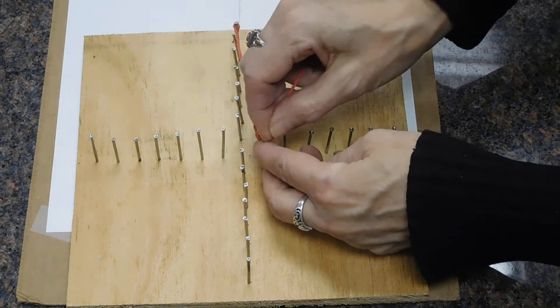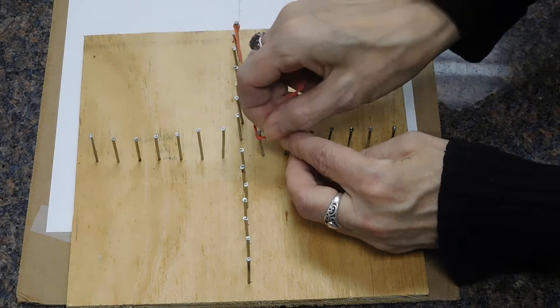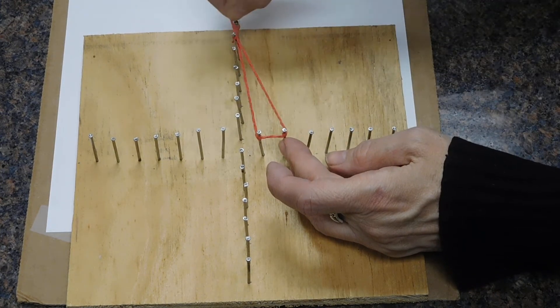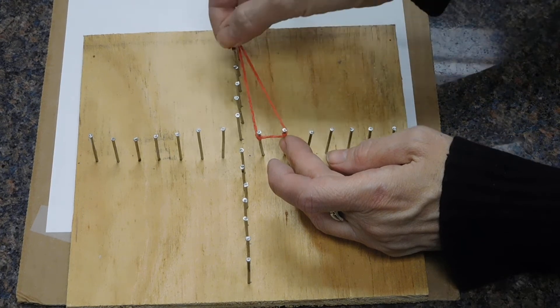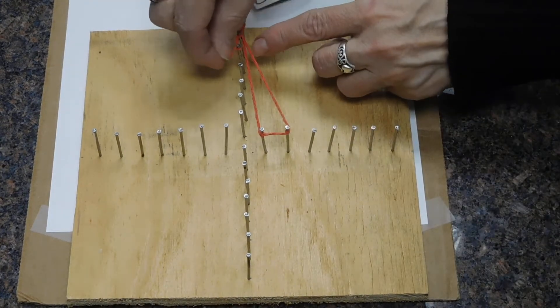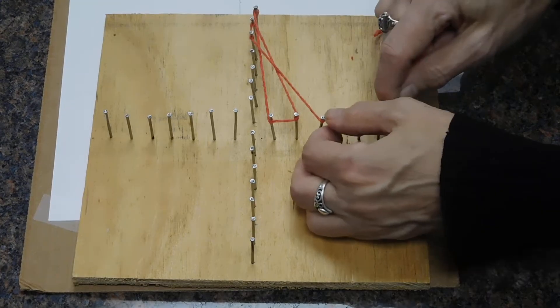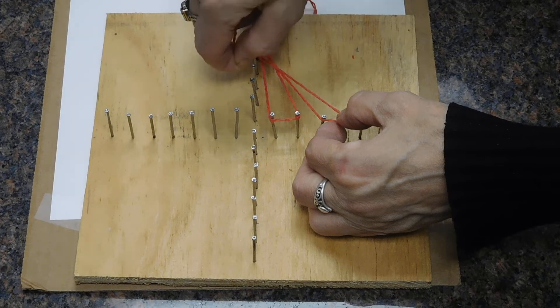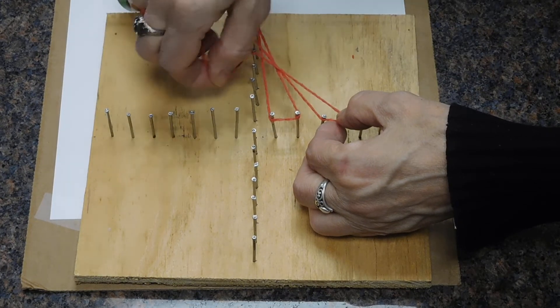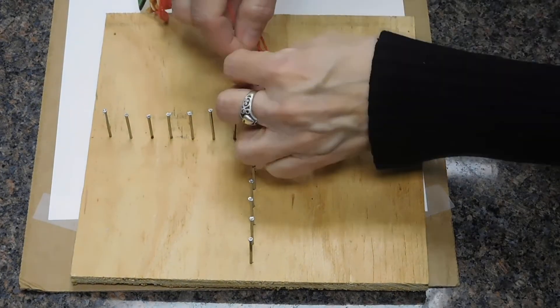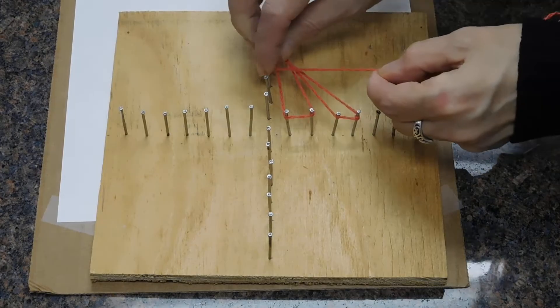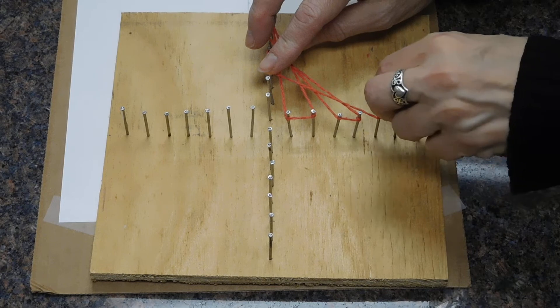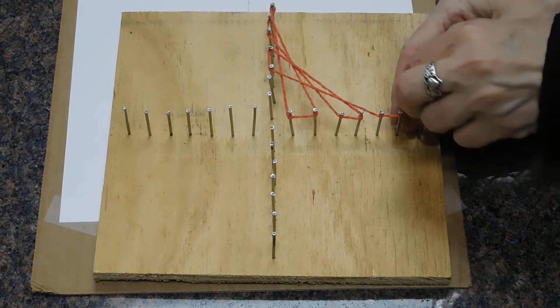You can use any color yarn that you want. I'm going to take it over to the next one, and go back to the second one. Then I'm going to twist it around the third one there. Now I'm going to go over to the next one, around, down one more.